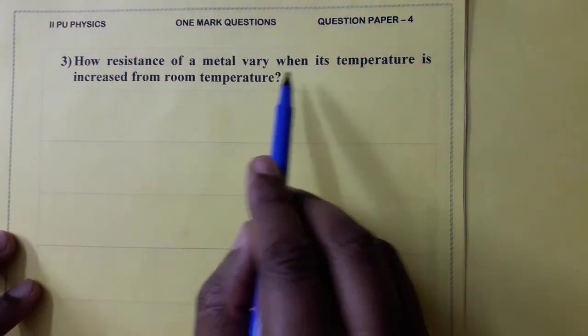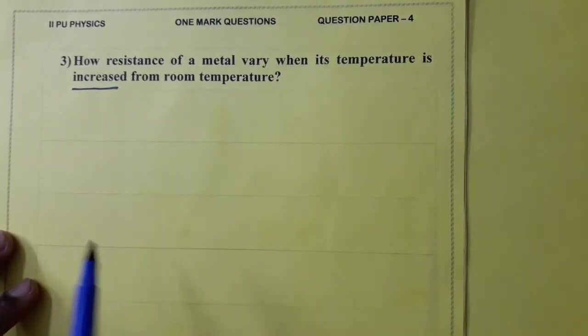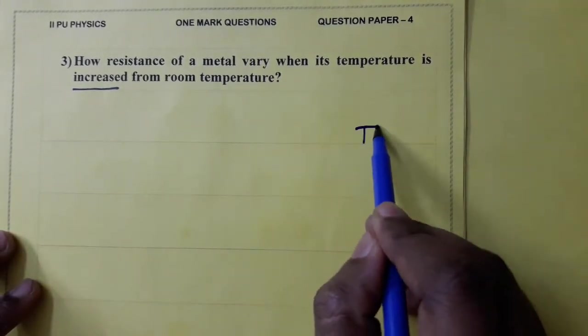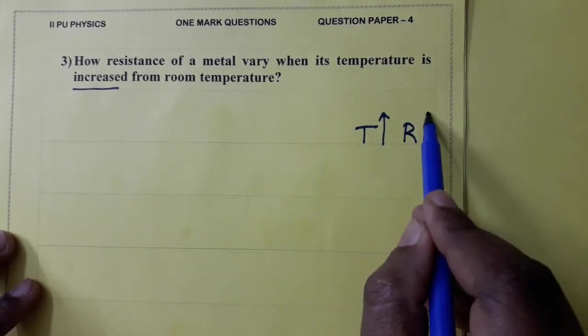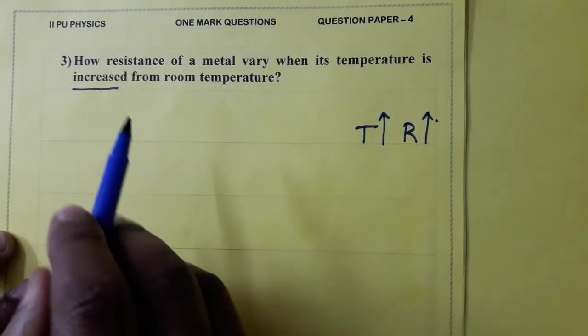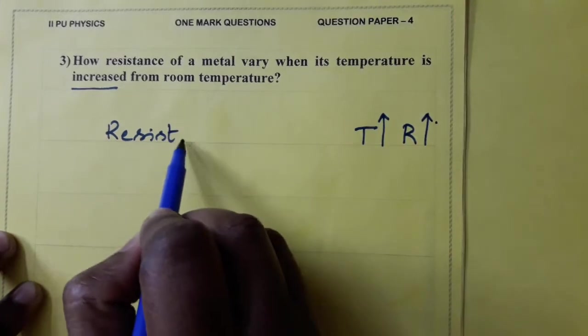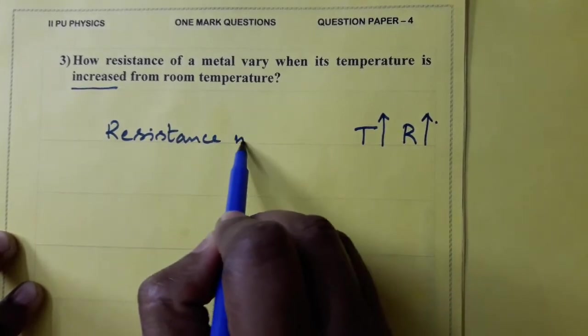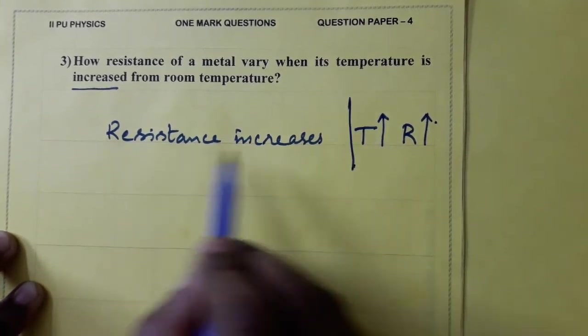How resistance of a metal vary when its temperature is increased from room temperature? Temperature of a conductor increases, then resistance increases. Since it is given temperature is increased, answer is resistance increases. This is enough.